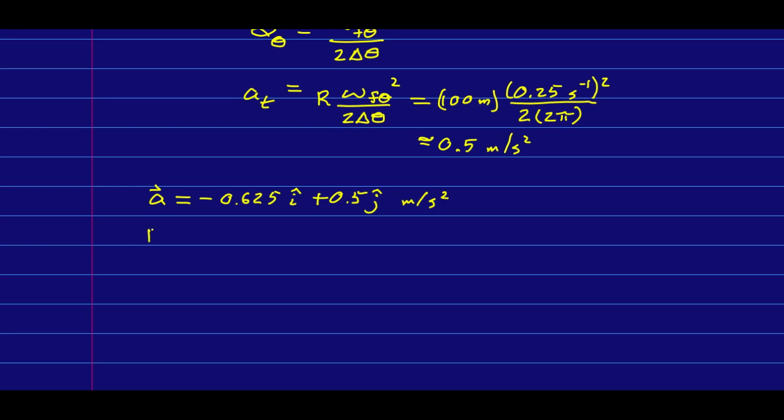The radial part is giving me my x component here. And the tangential part is giving me my y component. And now to get this static friction, all I have to do is multiply all of that by 1,000 kilograms. And I am done.